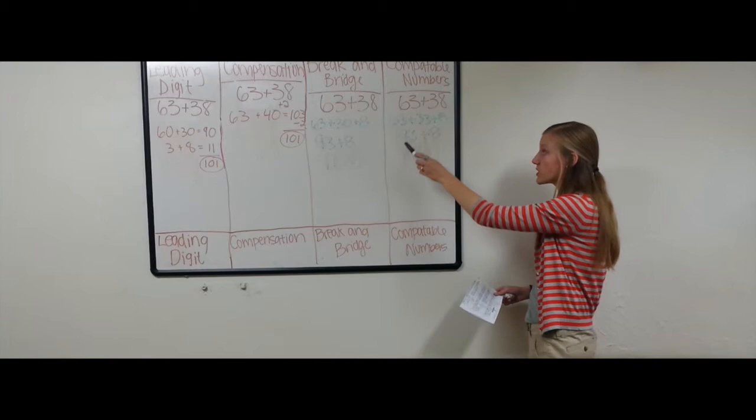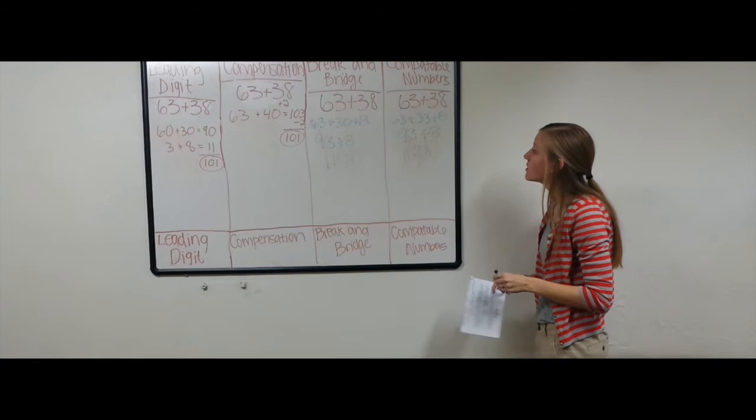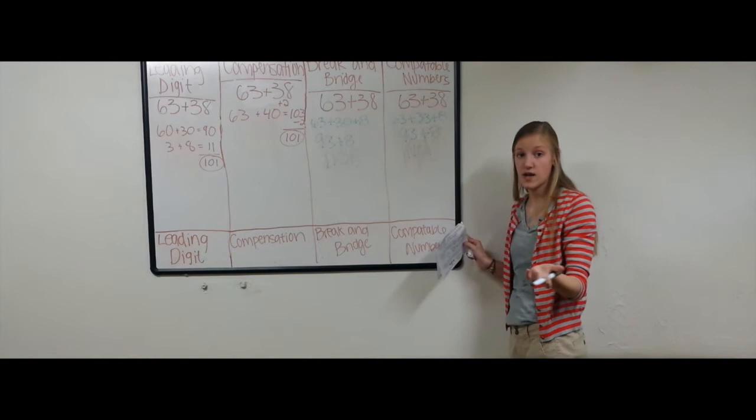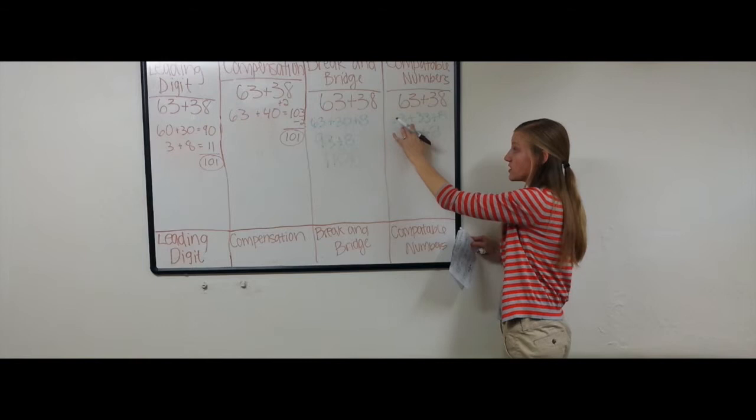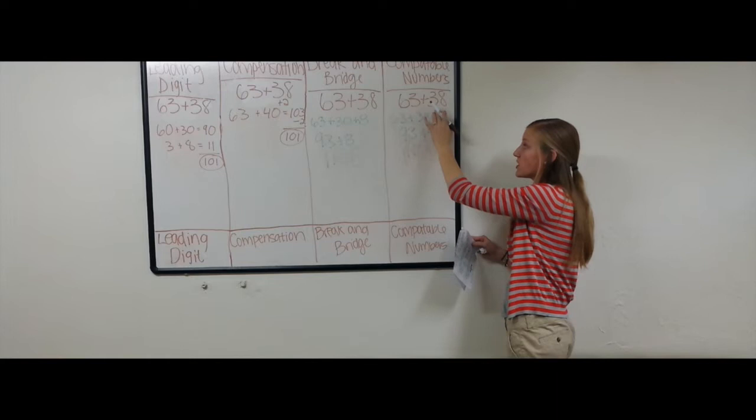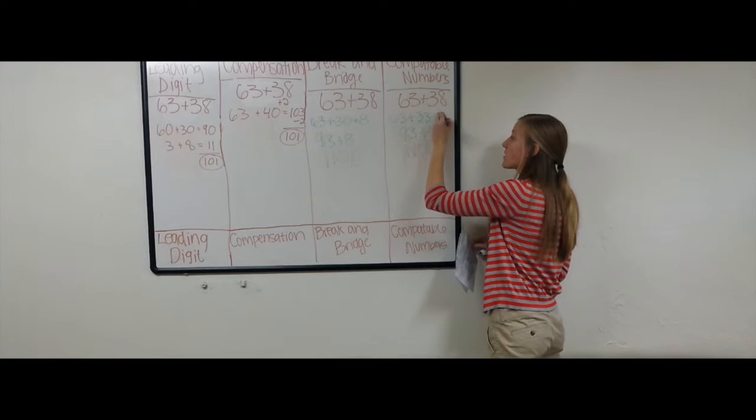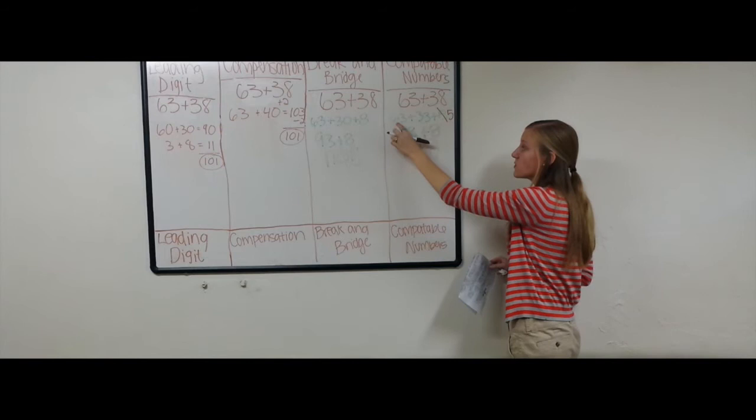Moving on to our last way of addition is compatible numbers. So again, our problem is 63 plus 38. Now we do have a little bit of mistake in this problem, but that's okay. Mistakes happen as we're adding. So, Zach chose to keep the 63 and change 38 into 33. Now when we change 38 to 33, we were subtracting 5 instead of 8. So we'll just change this to a 5.